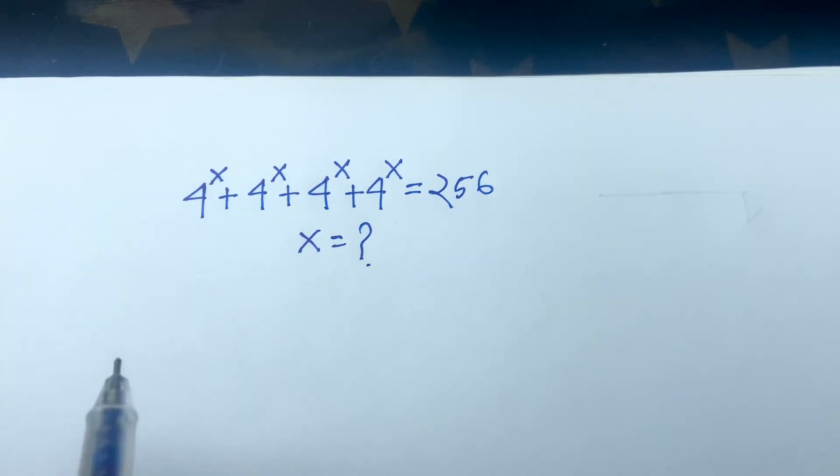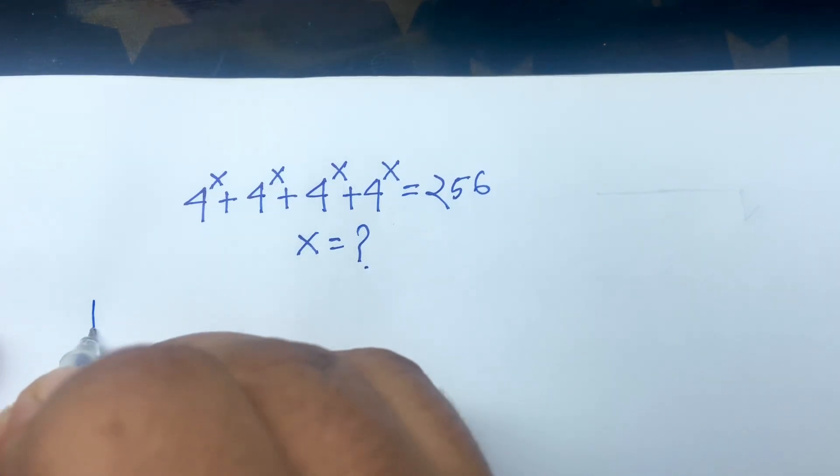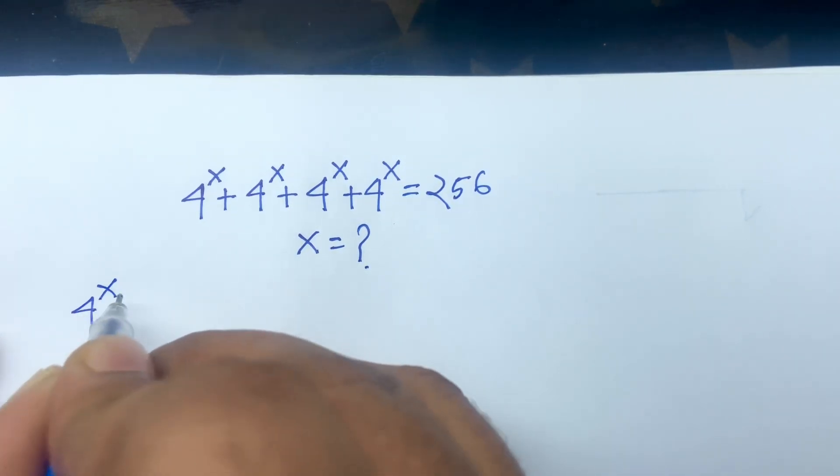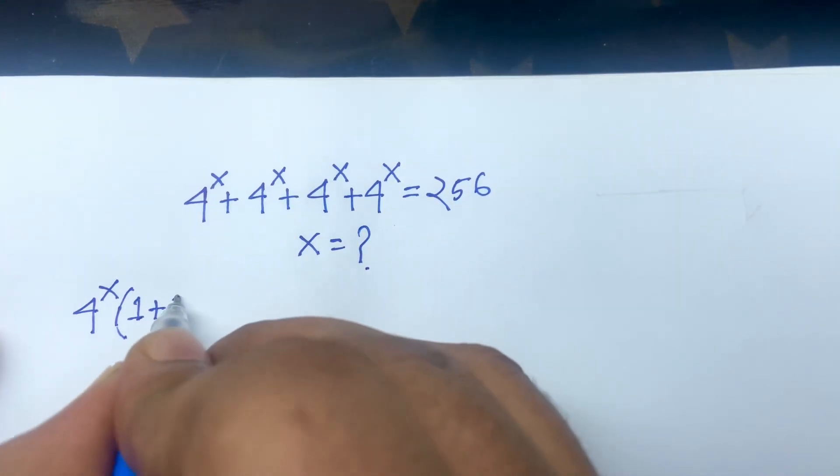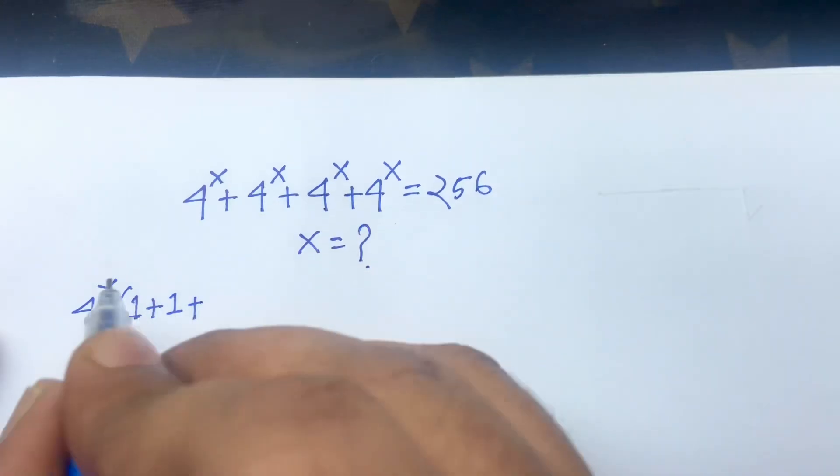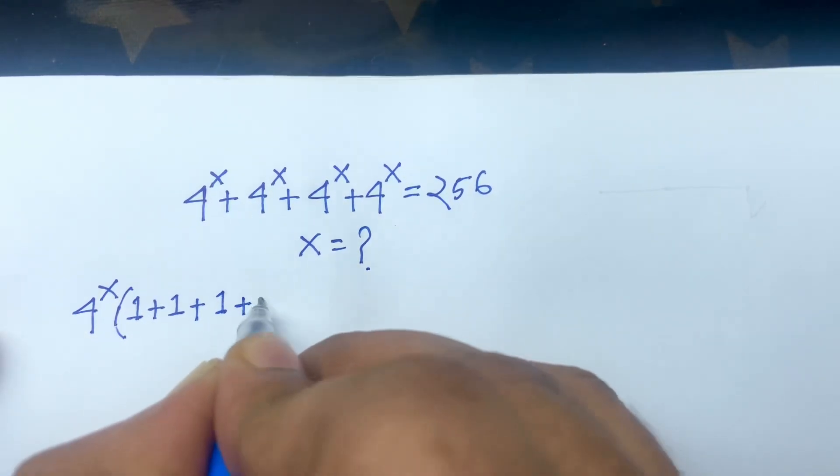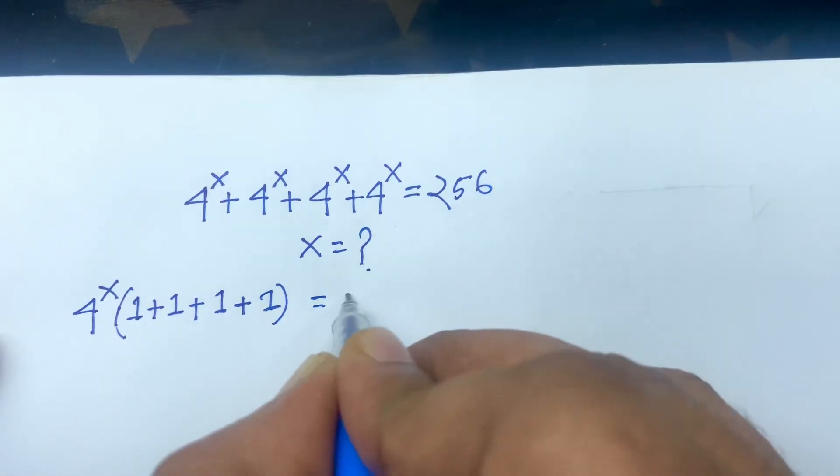In this case, 4 to the power x is common. So dividing each term by 4 to the power x, it will be 1 plus 1 plus 1 plus 1 equals 256.